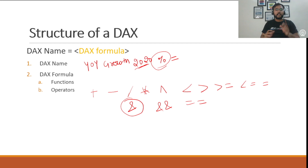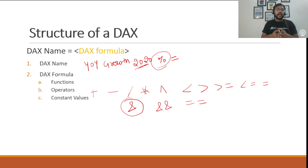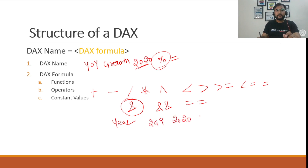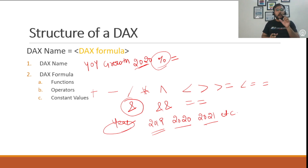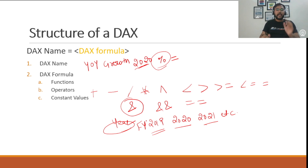The third component is constant values. A constant value is something which will not change. For example, we have a table with a column called 'year' containing values like 2019, 2020, 2021, etc. If we get a request to put a prefix 'FY' corresponding to each year value, then 'FY' is a constant value. We can create a DAX formula and use 'FY' as a constant value concatenated with this year column.